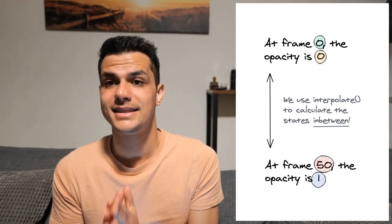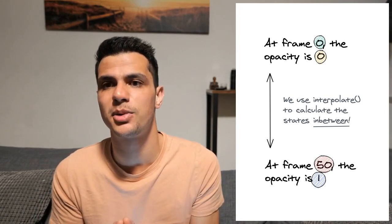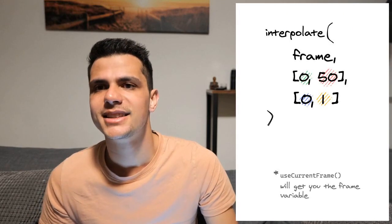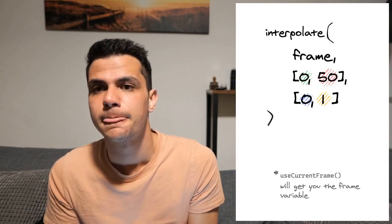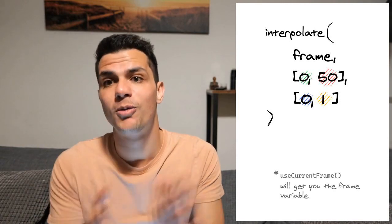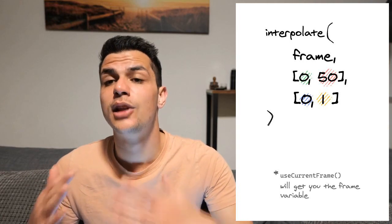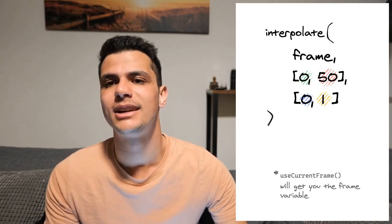To calculate a state in between, we need to pass three arguments to the interpolate function. The first one is the value that drives the animation. In this case we pass in the current time represented by the frame variable, because we want to animate things over time.